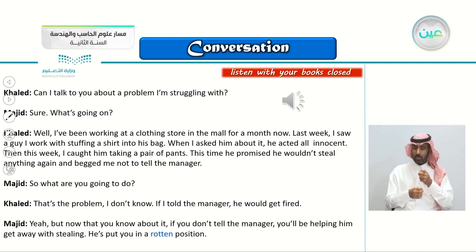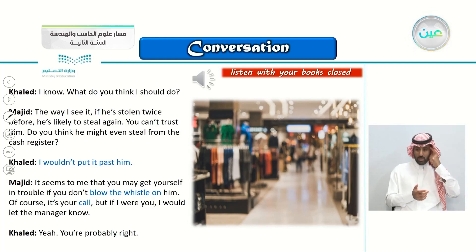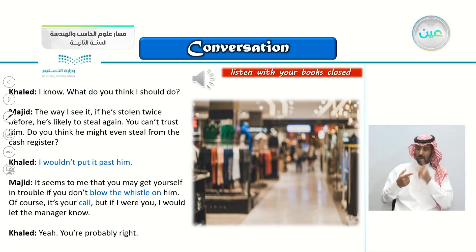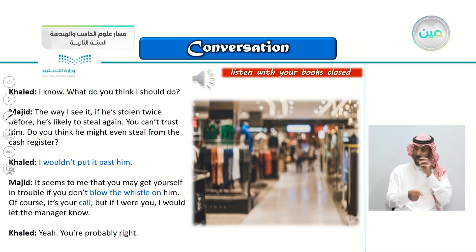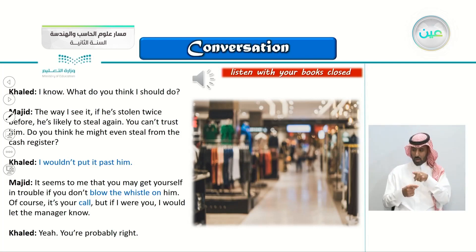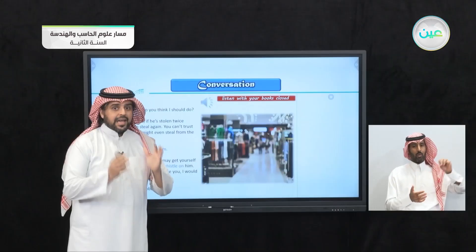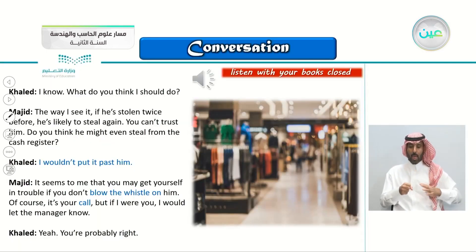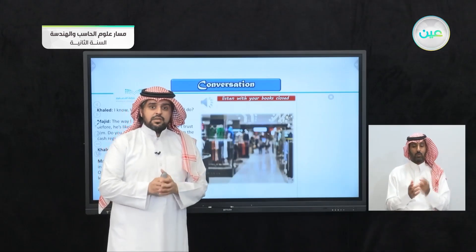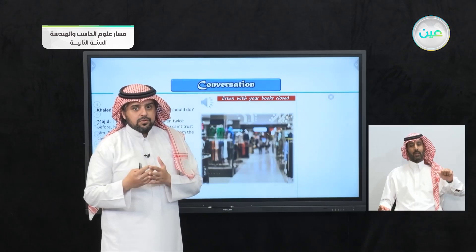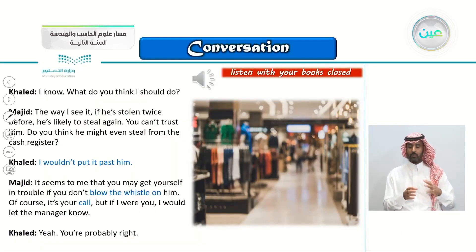Majid: 'He's put you in a rotten position.' Khaled: 'I know. What do you think I should do?' Majid: 'The way I see it, if he's stolen twice before, he's likely to steal again. Do you think he might even steal from the cash register?' Khaled: 'I wouldn't put it past him.' Majid: 'It seems to me that you may get yourself in trouble if you don't blow the whistle on him. Of course, it's your call. But if I were you, I would let the manager know.' Khaled: 'Yeah, you're probably right.' Notice at the end — Majid says, 'If I were you, I would let the manager know.' That is the summary of Majid's advice.